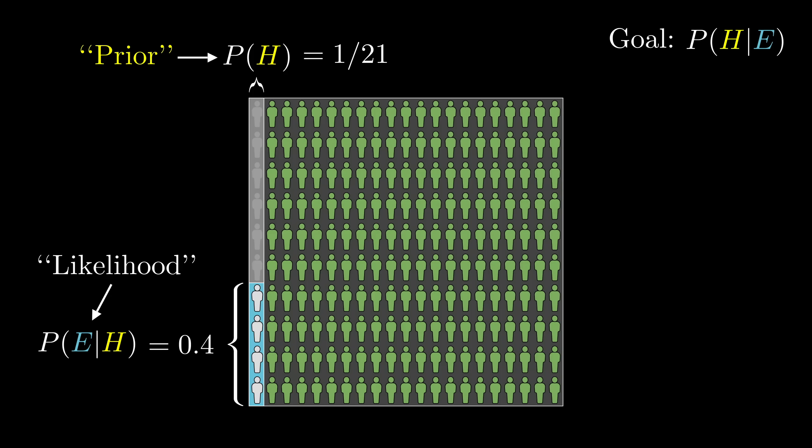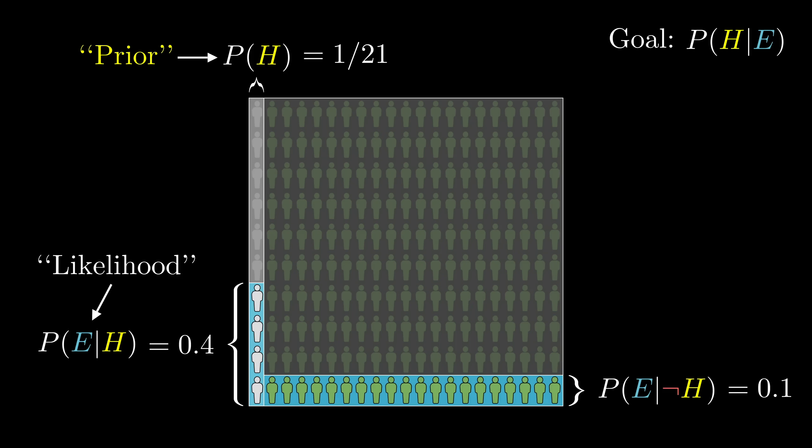Similarly, you need to know how much of the other side of the space includes the evidence, the probability of seeing the evidence given that the hypothesis isn't true. This funny little elbow symbol is commonly used in probability to mean not.